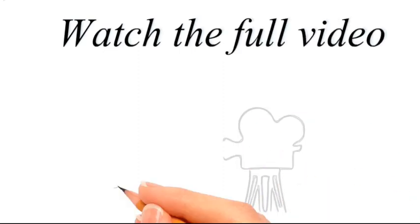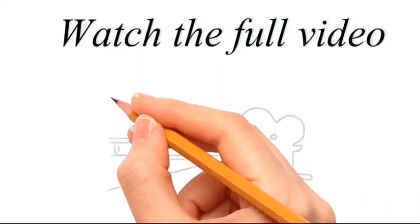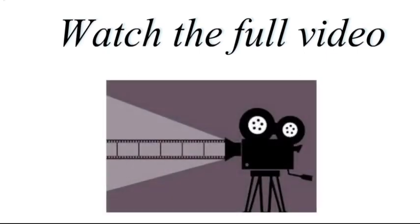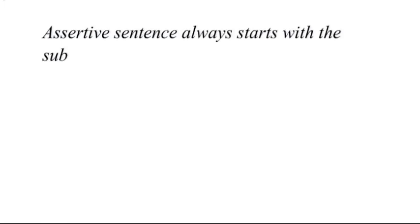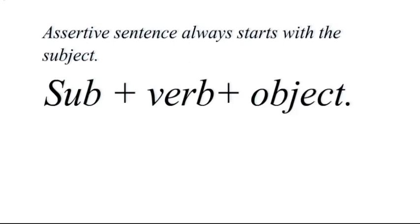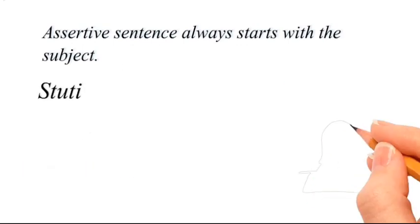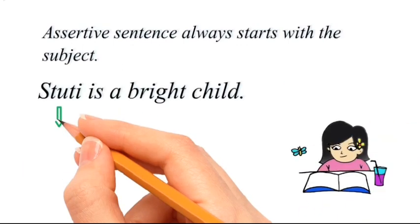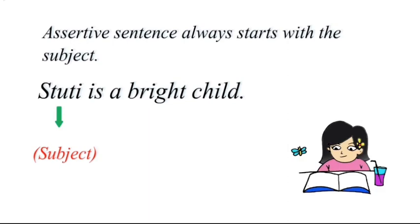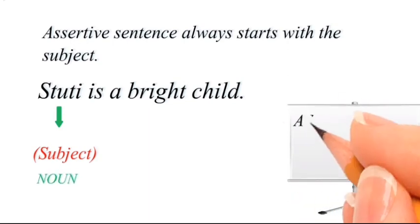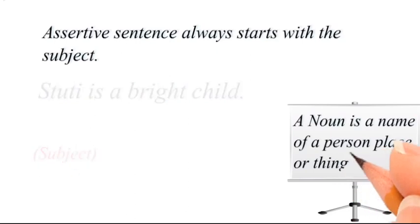Watch this video completely without skipping any part. Let's start with the basics. An assertive sentence always starts with a subject, then a verb, then an object. The subject can be either a noun or a pronoun. For example, 'Stuti is a bright child' — here 'Stuti' is the subject and it is a noun because it is the name of a person.